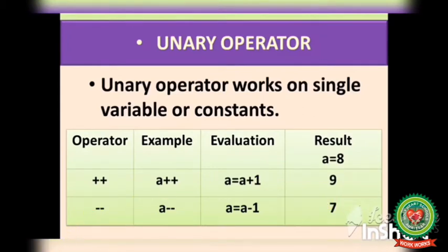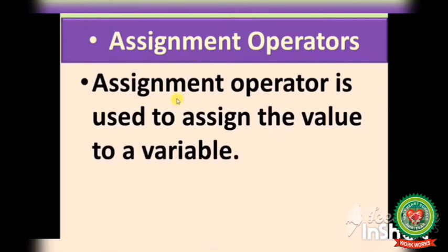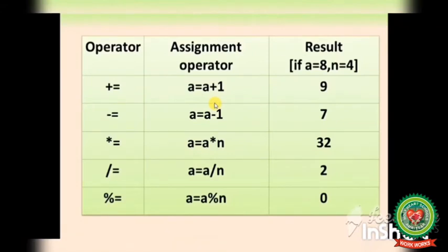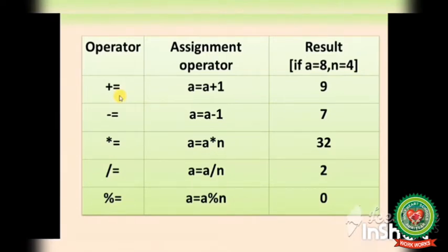Next is the assignment operator. Assignment operator is used to assign a value to a variable. The variable is always on the left side of the assignment operator, and the value to be assigned is always on the right side. We have five types of assignment operators: plus equal to, minus equal to, multiply equal to, division equal to, and modulus equal to. These are the basic arithmetic operators with an equal to sign added to assign the value.